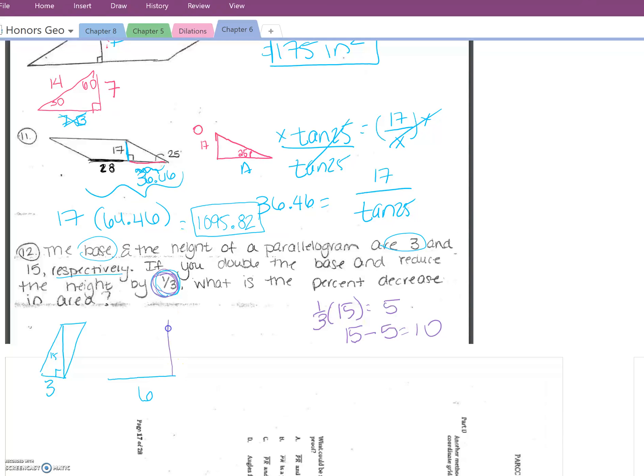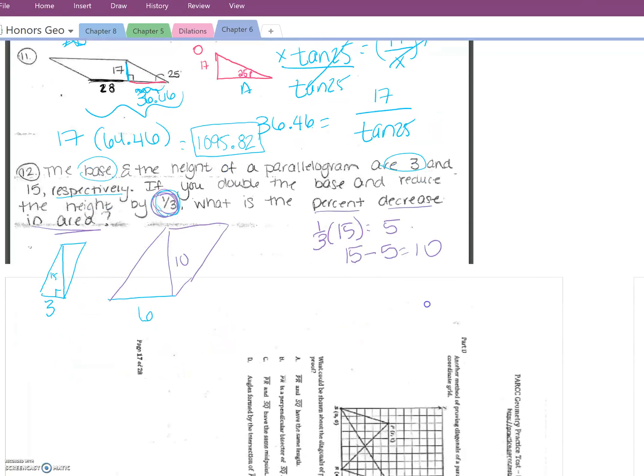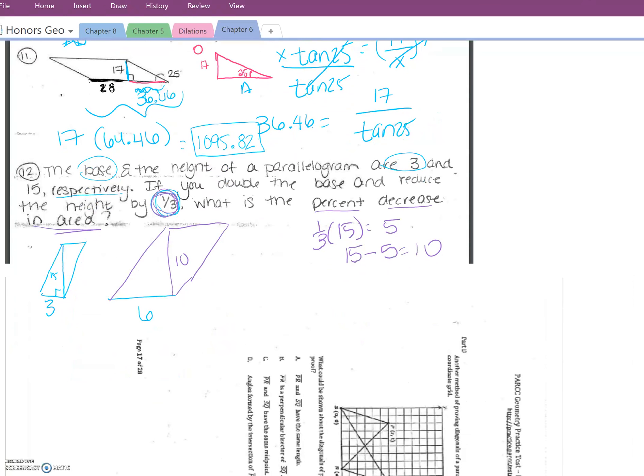So that means that the new height is 10, and we're trying to figure out what is the percent decrease in area. This is a very big throwback question all the way back to probably sixth or seventh grade percent of change. So first let's do this. We have to compare these two areas. So let's very quickly find the area of 3 times 15, which is 45, and then we'll find the area of 6 times 10, which is 60. And this is my mistake because this should say increase.